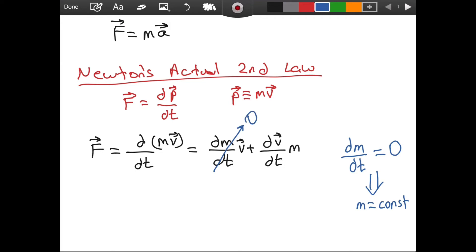So the first term is canceled, the first term is gone. Now let's focus on the second term. We have the time derivative of our velocity. This is by definition equal to our acceleration. So we have that F is equal to a times m, which means if we rearrange it, it means that F is equal to mass times acceleration. And that is it.